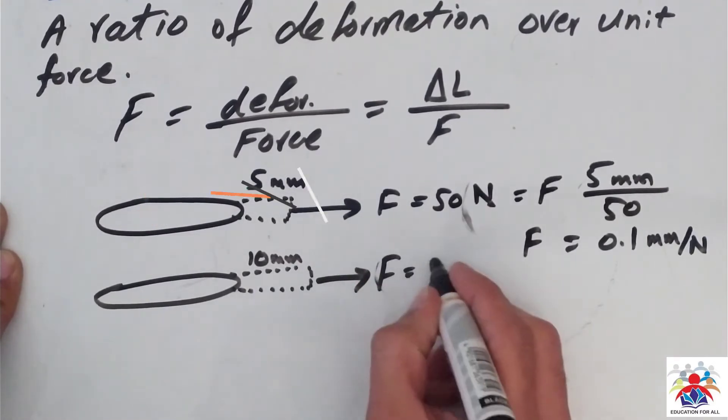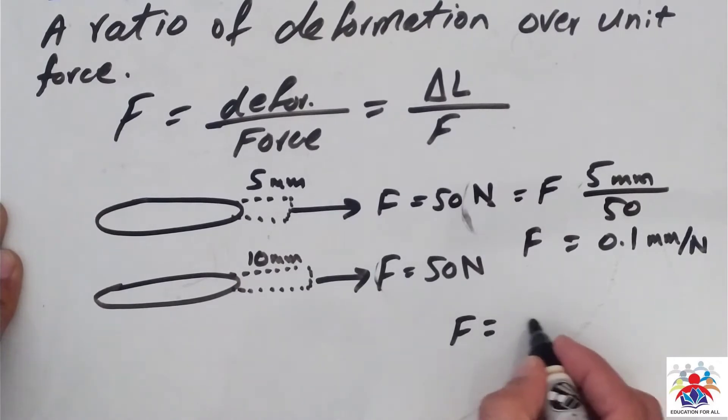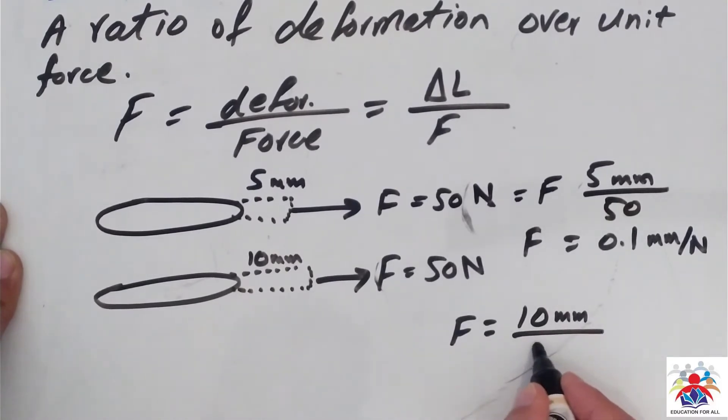Now, according to flexibility formula, F equals change in length over force. Change in length we have is 10 millimeters over 50 kilonewtons, so this is going to be 0.2 millimeters per Newton.